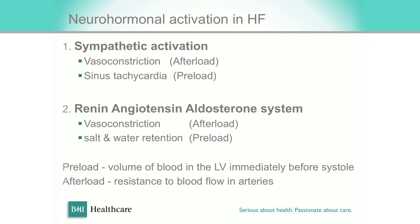The two most important activations in heart failure are sympathetic activation, which causes severe vasoconstriction and sinus tachycardia. The second most important is the renin-angiotensin-aldosterone system, which produces large amounts of angiotensin-2 — a powerful vasoconstrictor — and also stimulates aldosterone to secrete more salt and water. So in one sentence, what happens in heart failure: there is an increase in preload and an increase in afterload.